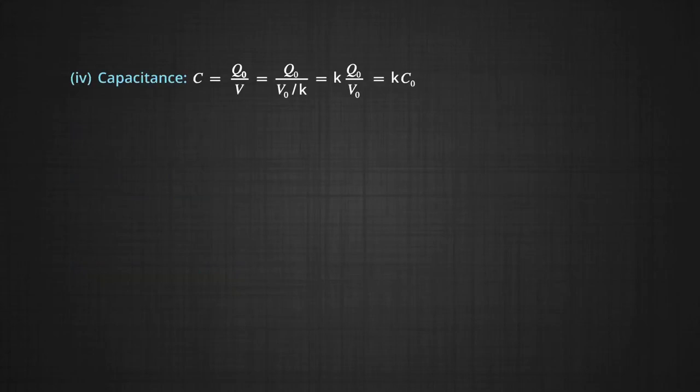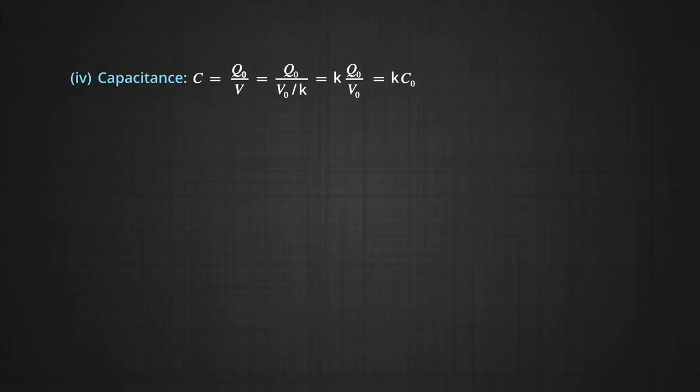The effect on capacitance: as charge remains the same because the battery is disconnected, that is Q equals Q₀, but potential has decreased, V equals V₀ by K. And we know that C equals Q by V, so on substituting the values, we get C equals Q₀ times K by V₀, that is K times C₀. So, as a result of the decrease in potential difference, the capacitance increases K times.